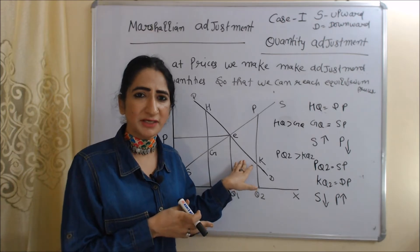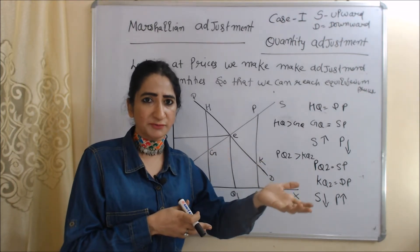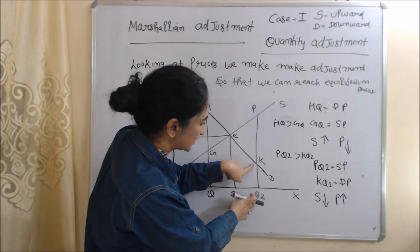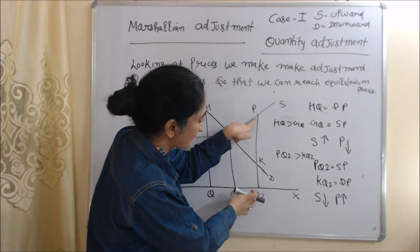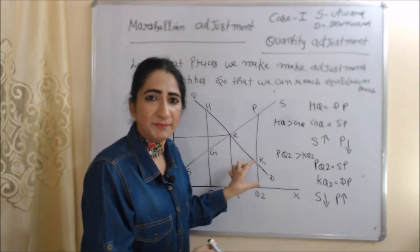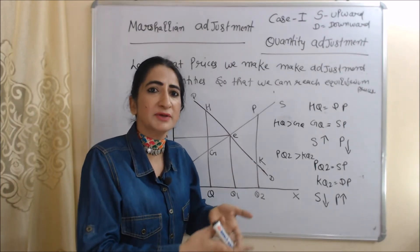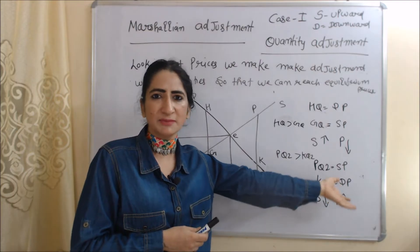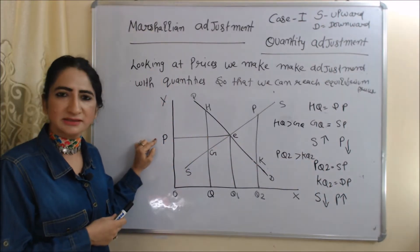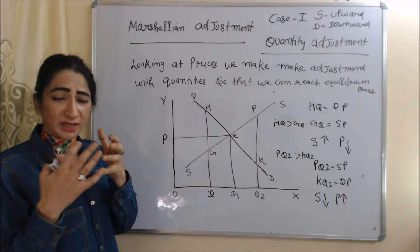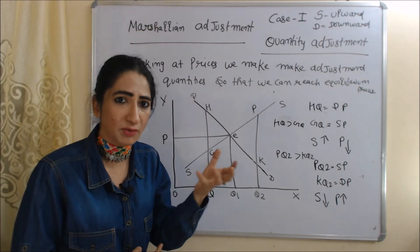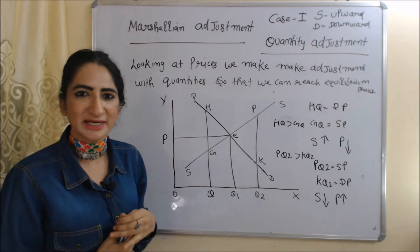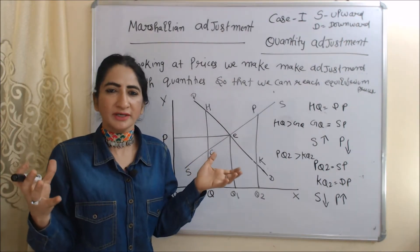On the other hand, if supply price is more than demand price, people are willing to pay less than we are charging. Supply price is PQ2 and demand price is KQ2 — supply price exceeds demand price. This is not a good situation, so we reduce supply; as we reduce supply, prices increase and we ultimately reach equilibrium price. So here we see: looking at prices, we make adjustments with quantities to reach equilibrium. This is called Marshallian quantity adjustment, and this equilibrium is called a stable equilibrium.